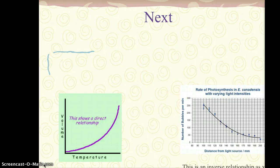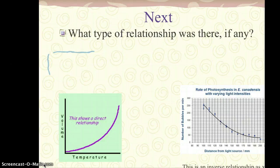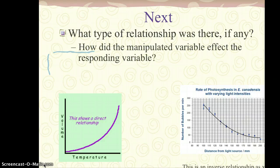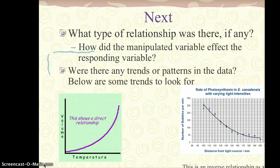So next, what you want to do is when you look at your graph, you're going to have to identify a type of relationship if there was any. So I know these are line graphs down here, but we can pretty much just assume that these would represent trend lines, maybe on your bar graphs. So remember, how did the manipulative variable affect the responding variable? Was there any trends or patterns in the data? Here's what you can do.